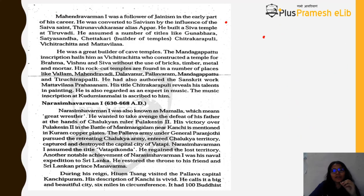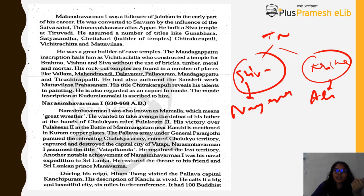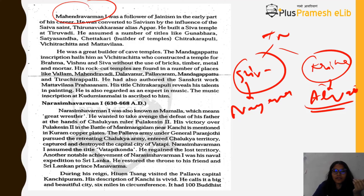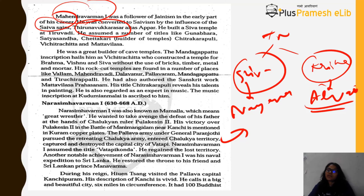In Tamil Nadu the Shiva devotees were called Nayanmars and the Vishnu/Krishna devotees were called Alvars. Mahindra Varman became an ardent devotee of Shaivism after his conversion by the Nayanmars saint Appar — whose full name is Thirunavukkarasar. Appar is a very famous Nayanmar. Mahindra Varman also built a Shiva temple at Thiruvadi and assumed several titles including Gunabhara, Satyasandha, Chettakari (builder of temples), Chitrakara Puli, Vichitachitta, and Mattavilasa.